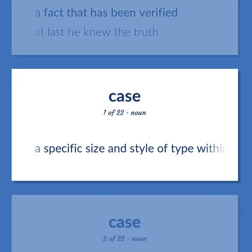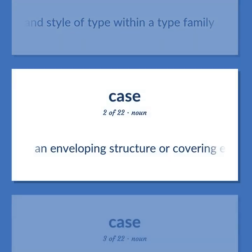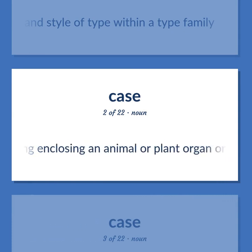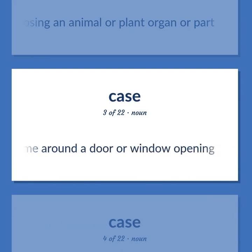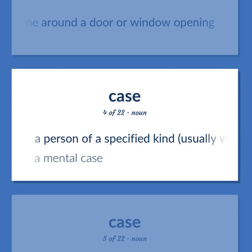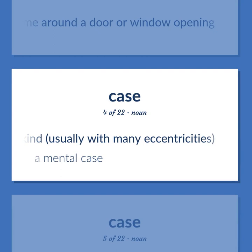Case: A specific size and style of type within a type family. An enveloping structure or covering enclosing an animal or plant organ or part. The enclosing frame around a door or window opening. A person of a specified kind, usually with many eccentricities — a mental case.